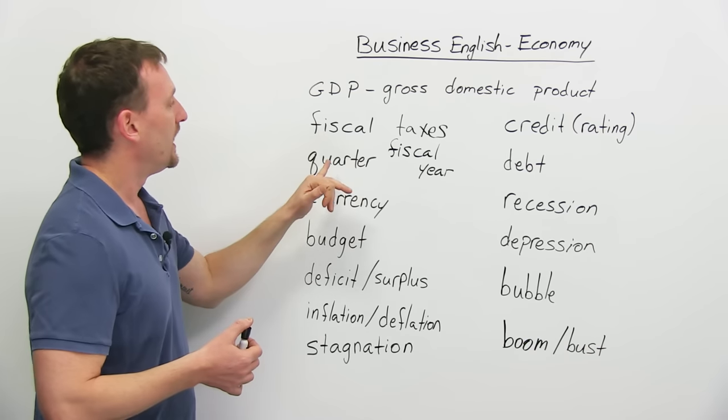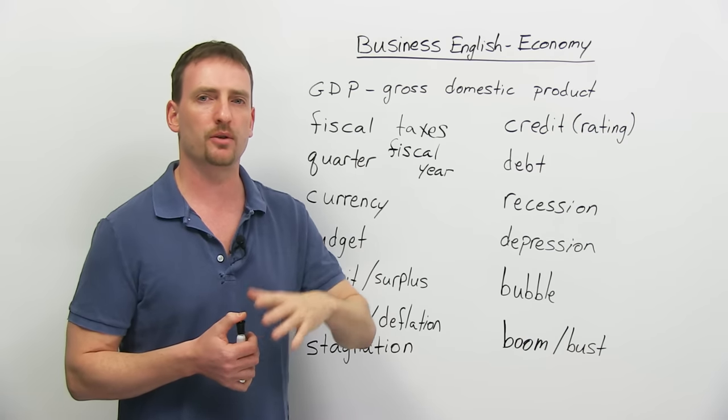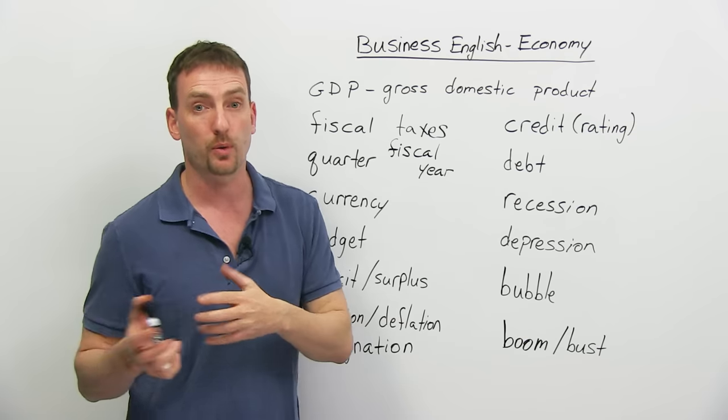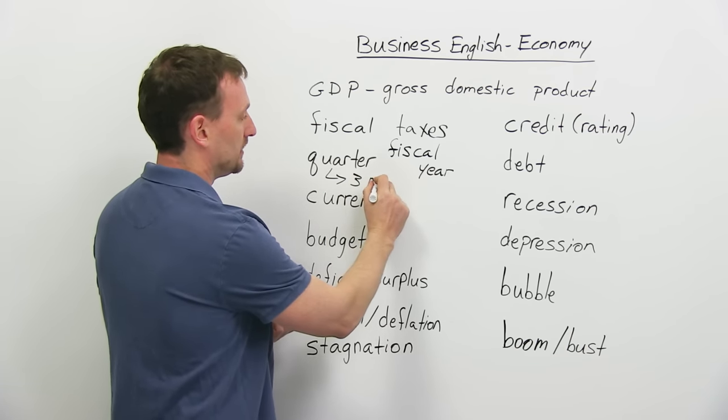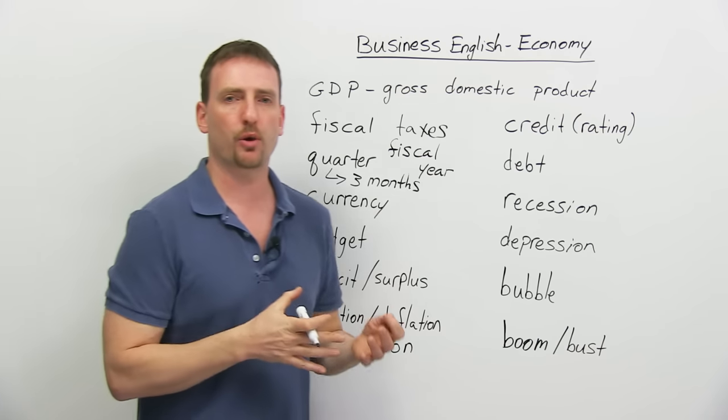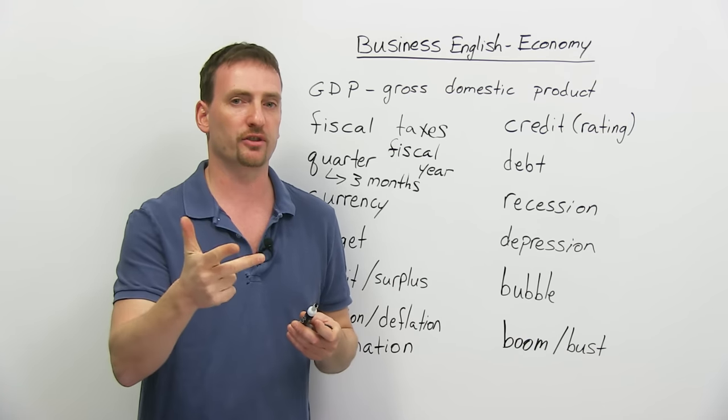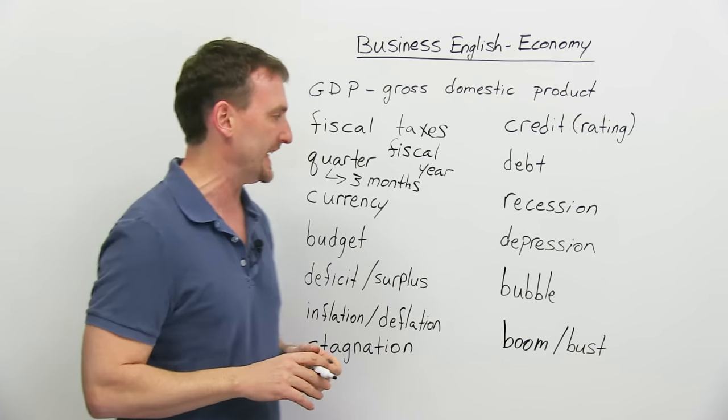A quarter. You're going to always hear about prices and stocks and values going up or down over the last quarter or over the last two quarters. What is a quarter? It's basically three months. If you're talking about the first quarter of the year, you're talking about January, February, March. That's your first quarter. Your next three months, second quarter. Four quarters makes one year.